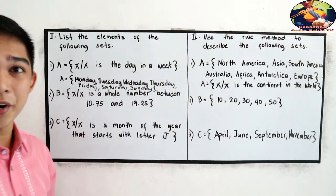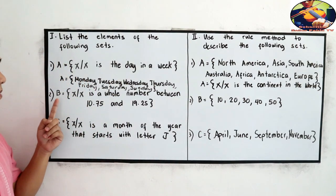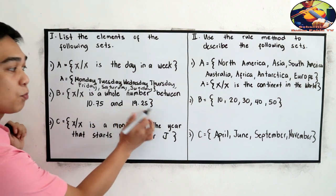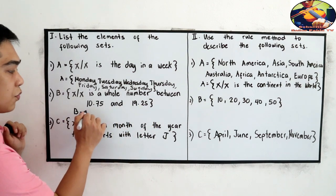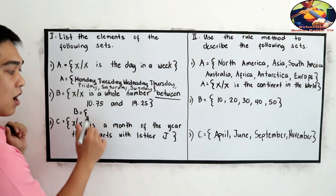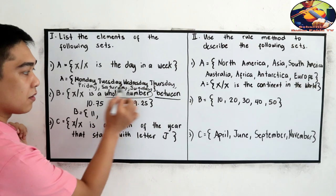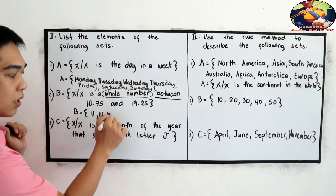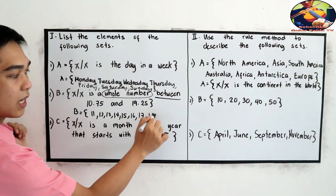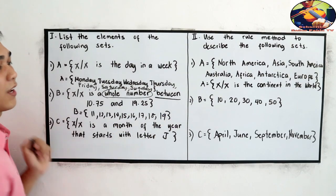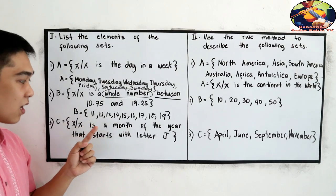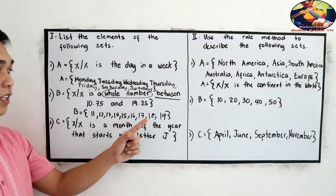Let's check your work. For test 1, set B is equal to x such that x is a whole number between 10.75 and 19.25. So B is equal to {11, 12, 13, 14, 15, 16, 17, 18, and 19}. Those are the elements in our set.